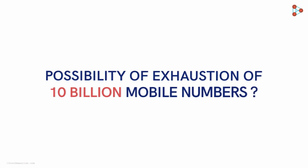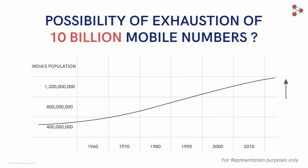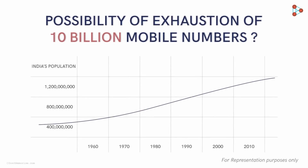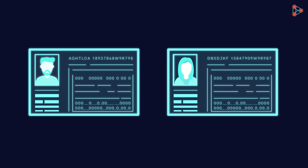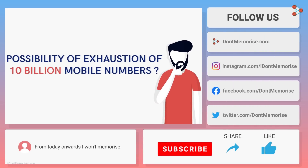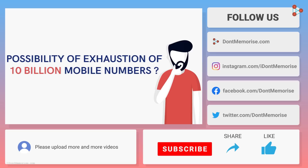What would happen if all the 10 billion possibilities are exhausted? Is it even possible in the coming years? With the growth of population, we cannot predict that as of now — only time will tell. One option we could think of is that in the future, we could completely switch to something like virtual IDs to make phone calls instead of using cellular networks. Let us know your opinions too. Don't forget to subscribe to our channel and share this video with your friends and family. Happy learning!